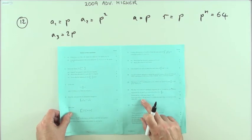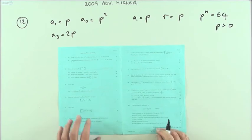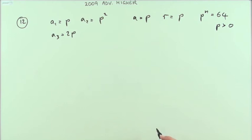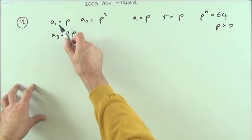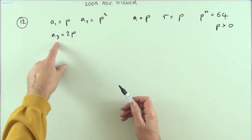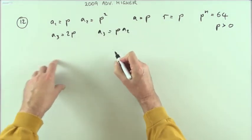Given also that a_3 is 2p and that p is greater than 0, obtain an exact value of p and also the value of n. To get the next term you multiply the previous term by the common ratio, so a_3 must be p times a_2.